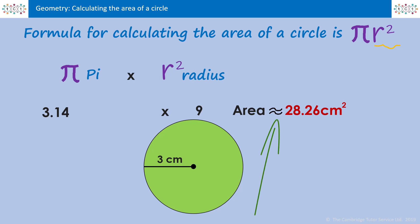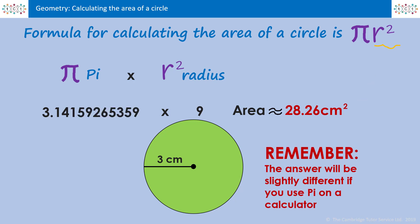Notice this symbol here, remember this means approximately. Because pi is actually a longer number than 3.14, and if you were to do this on a scientific calculator where pi is already set in there, you'll get a slightly different answer to the one we have here, which is why we put that it's approximate.